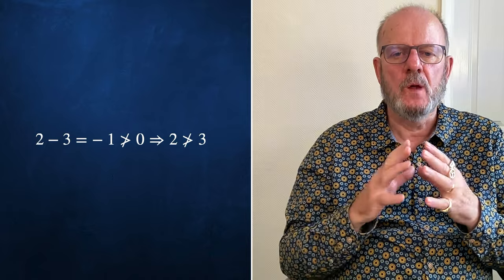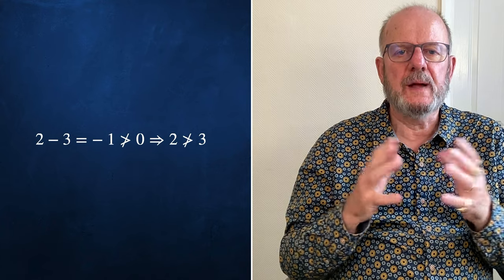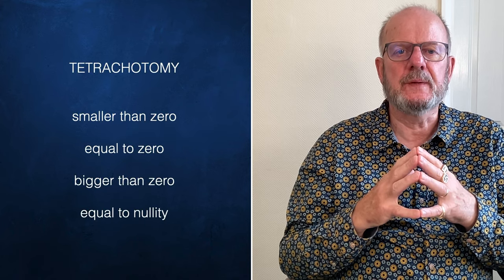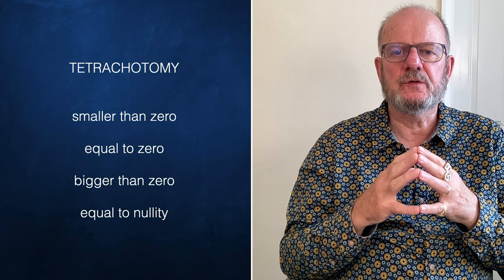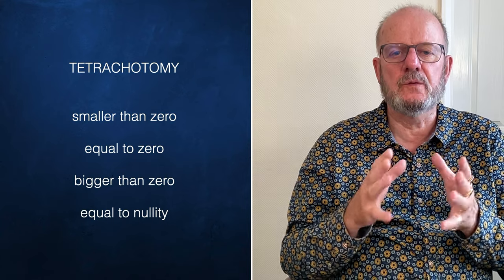Pause the video and think about it. Welcome back. I added Nullity as a fourth category to make a tetrachotomy. Every number falls into just one of the four categories. Smaller than 0, equal to 0, bigger than 0 or equal to Nullity.